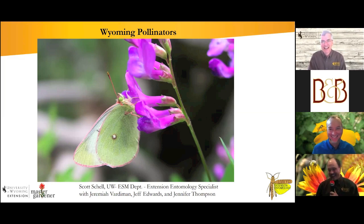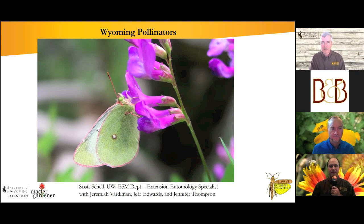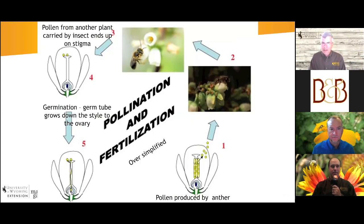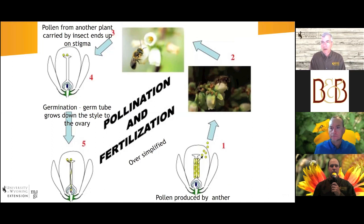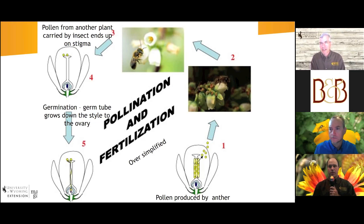Pollinators are a big subject, and today we'll try to talk about ones that are pretty common on flowers in Wyoming and what you might see when you're out looking at flowers. Both people and insects are attracted to flowers for different reasons. First, we should define pollination. There are plants that are wind pollinated and don't require insects at all, some that are self-fertile, and others that actually have to have a pollinator — whether an insect or a hummingbird.